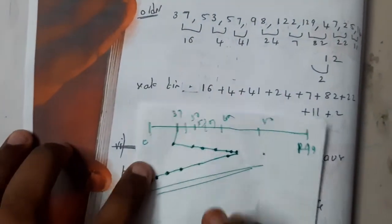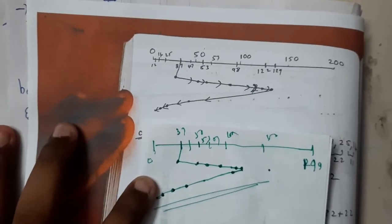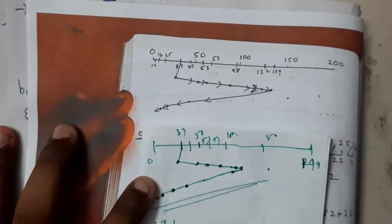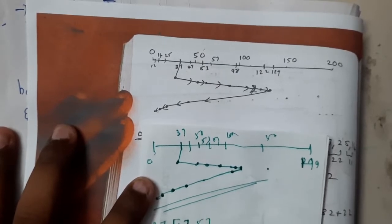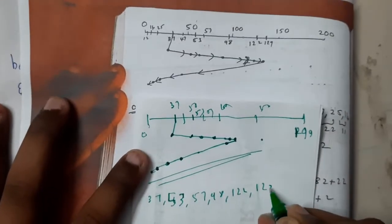Let me write it from the above diagram so it's clear. 37 to 53, 53 to 57, 57 to 98, 98 to 122, 122 to 129, 129 to 47, 47 to 25, 25 to 14, 14 to 12.